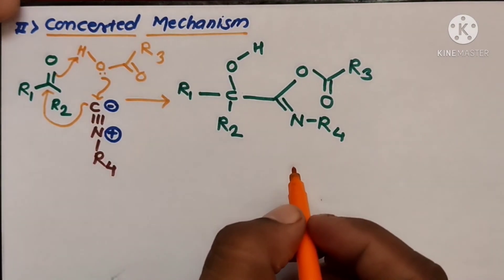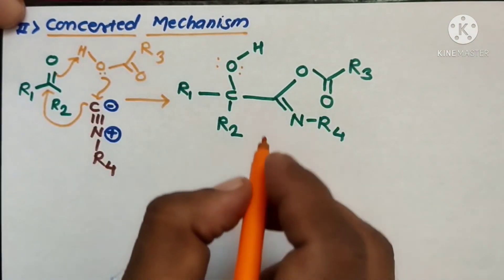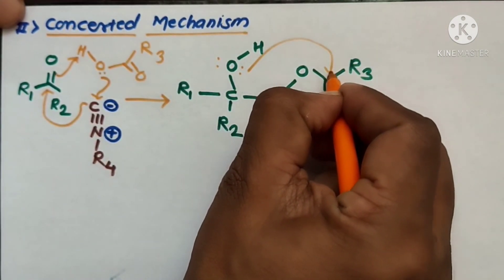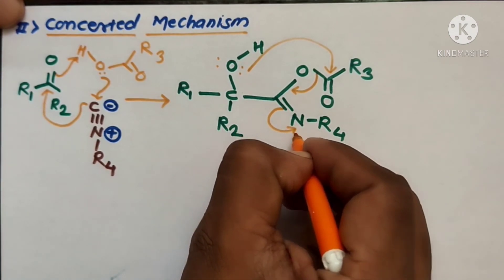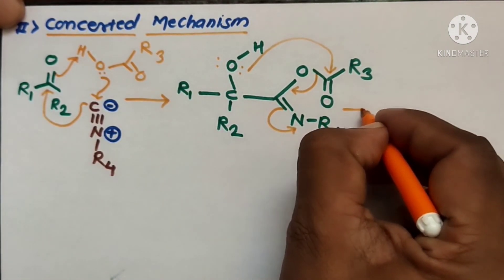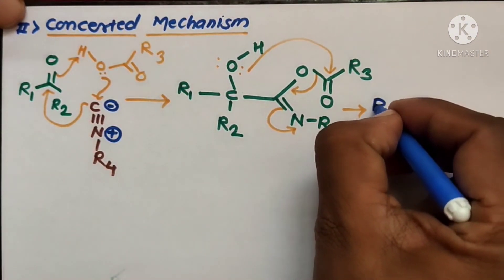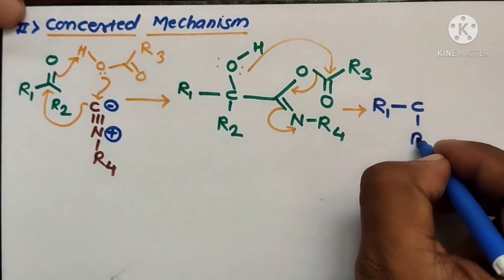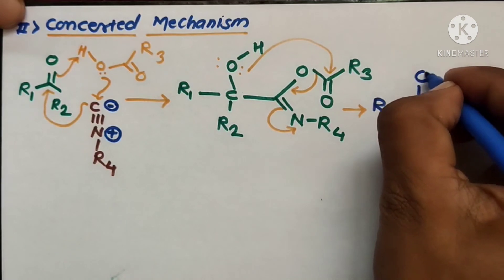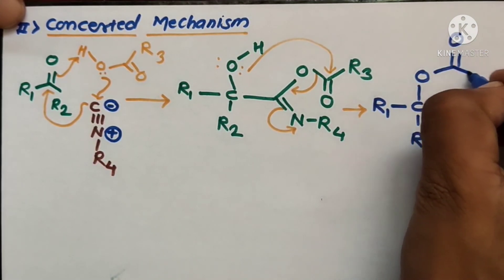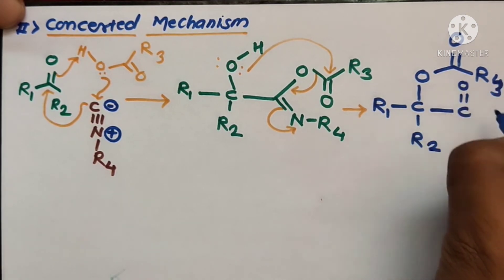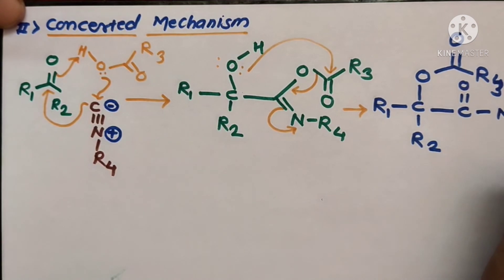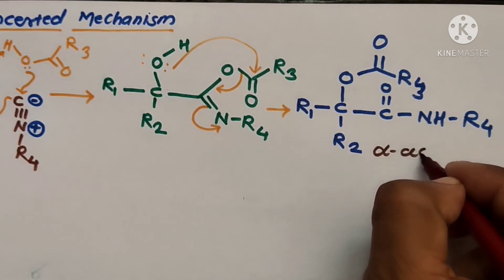In the next step, the oxygen non-bonded electron pair shifts toward the carbonyl carbon, bonding electrons shift toward oxygen to form a single-to-double bond, and bonding electrons shift toward the nitrogen atom, forming the final product: R1-C(R2)-O-C(=O)-R3 with C=O and NH-R4 — that is, the alpha-acyloxy amide compound.